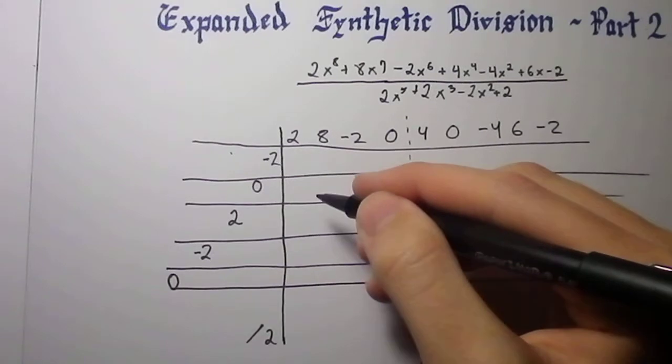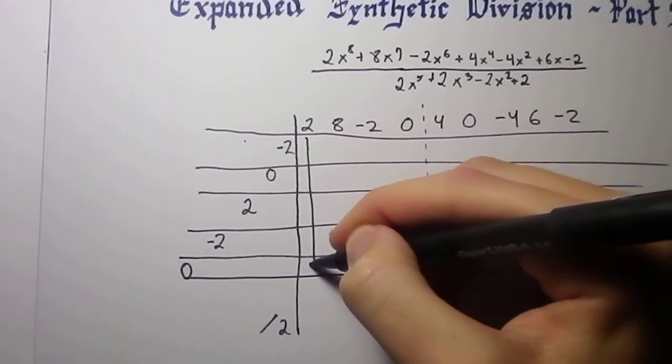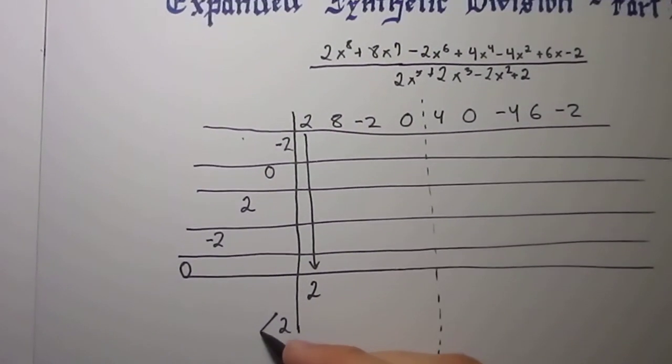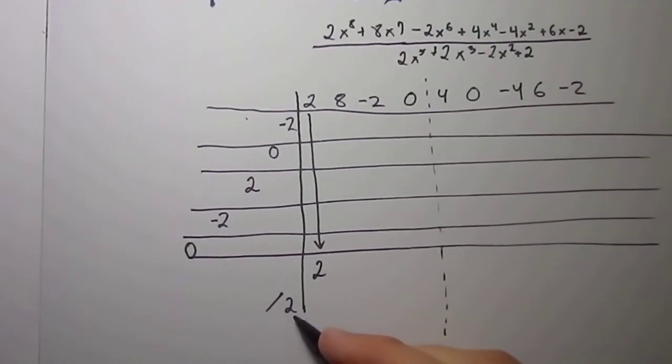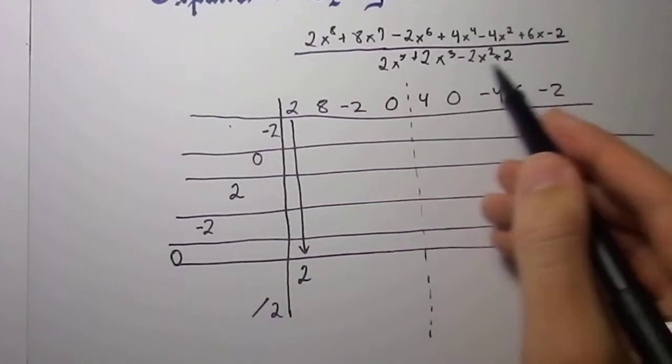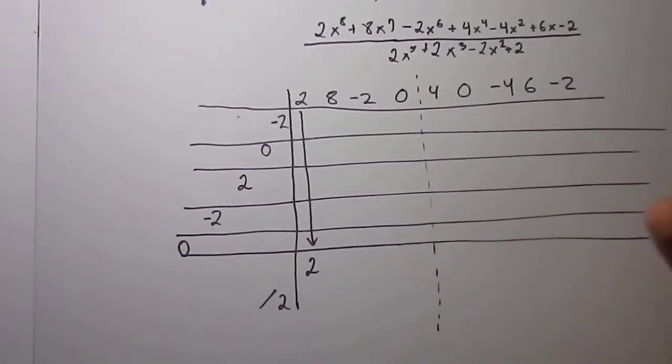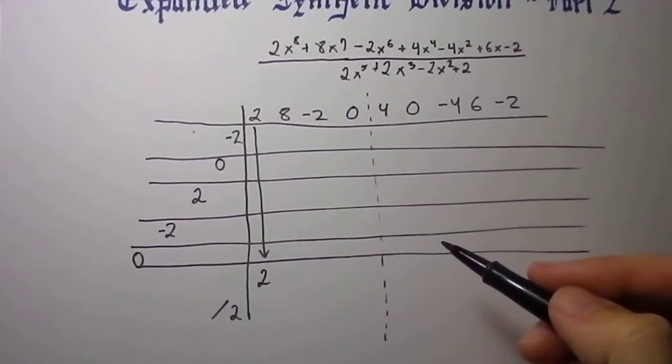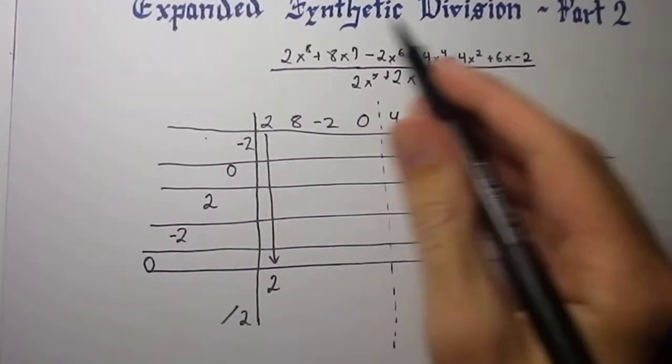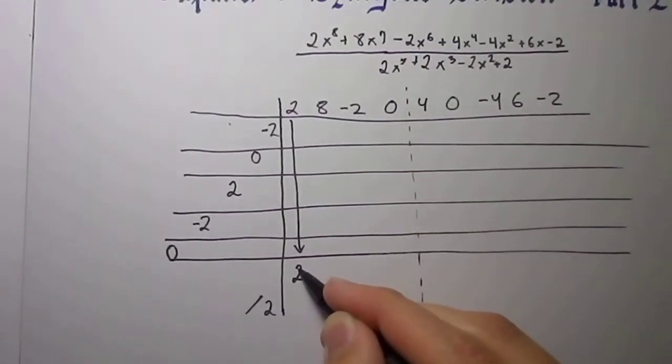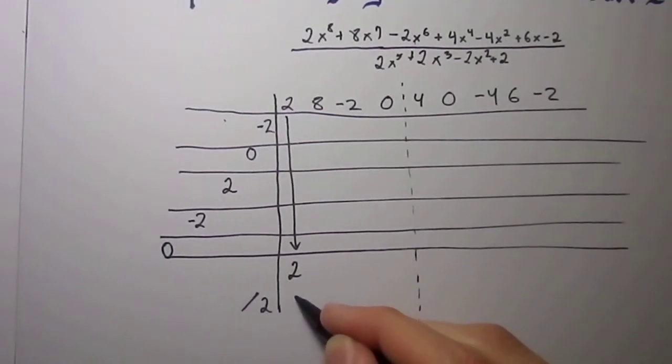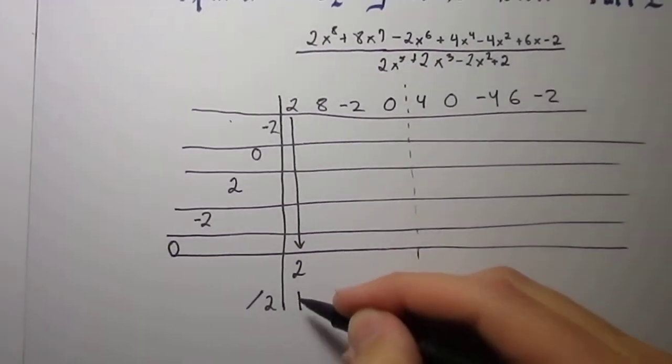So, the first thing to do is, of course, drop down this 2. So this 2 goes here, and now you divide that by 2. Now, if this was 3x to the 5th, everything would be divided by 3. And I know that everything's divided, you can factor out a 2, but for simplicity and to make this an easy video with no fractions or decimals, that's why everything's divisible by 2. So, you drop down the 2. Now, you take 2 divided by 2, which is 1.